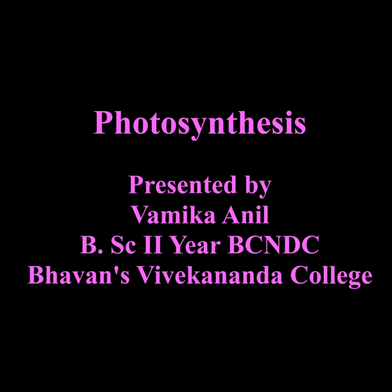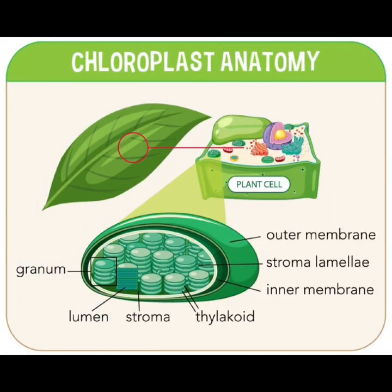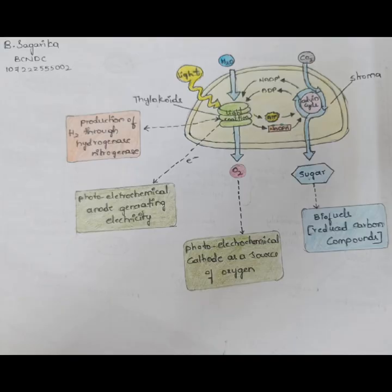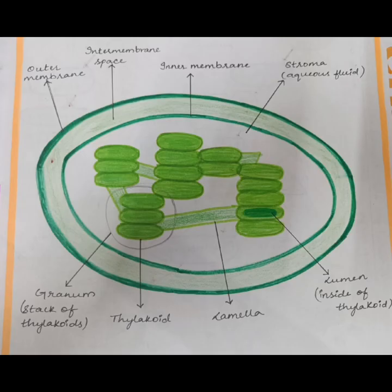Photosynthesis presented by Vamika. Chloroplast Structure. Chloroplasts are a type of plastid, a round, oval, or dish-shaped body that is involved in the synthesis and storage of food materials.